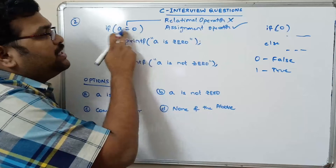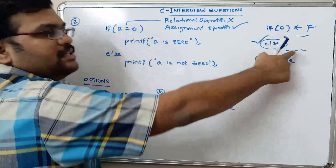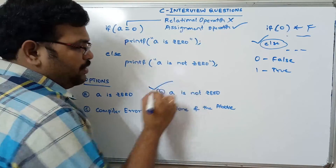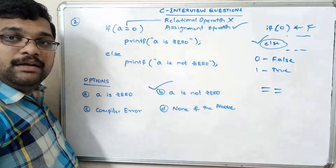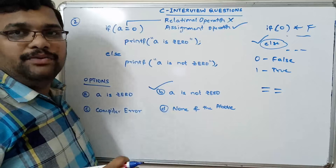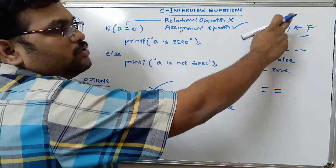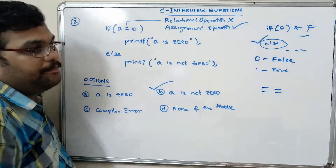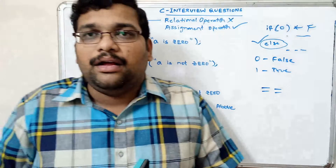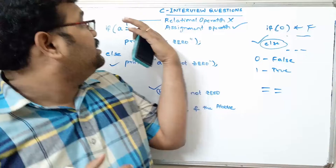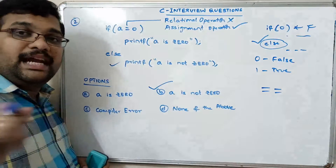Since 0 is assigned to a, the condition becomes if(0), which is false. The false block — the else — will be executed. So the answer is 'a is not 0'. The relational operator would be double equals (==). If it were ==, then we would compare the a value. But here we are assigning 0 to a, so the condition is 0, which is false, and the else block executes.